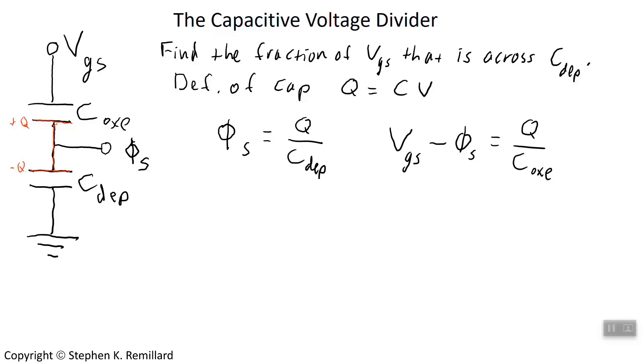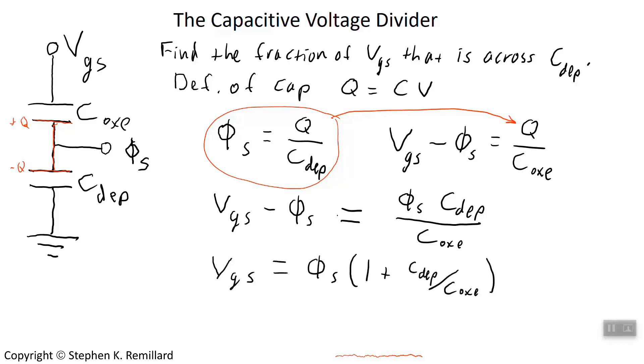Take this first equation and substitute it in for Q right there, so replace that Q with phi sub s times C depletion. Now we have an expression with Q eliminated. Let's solve that for phi sub s.